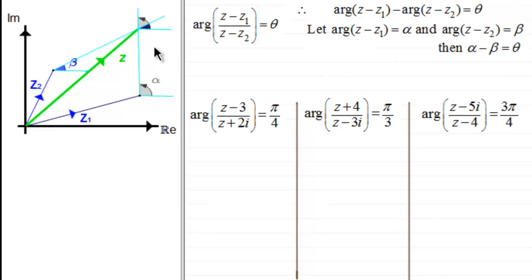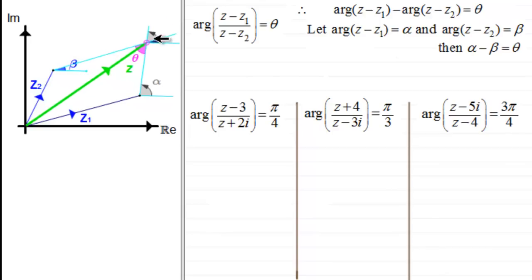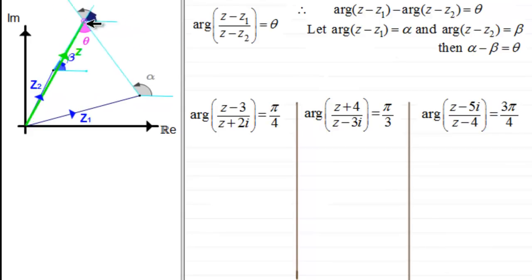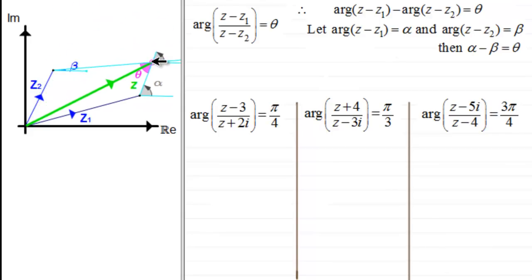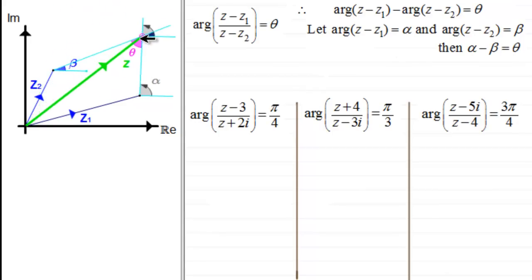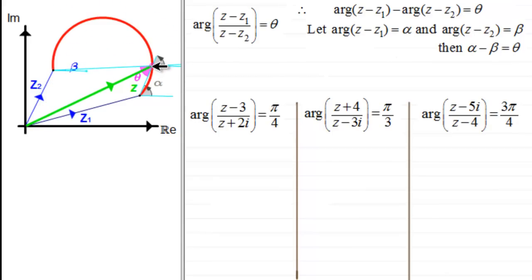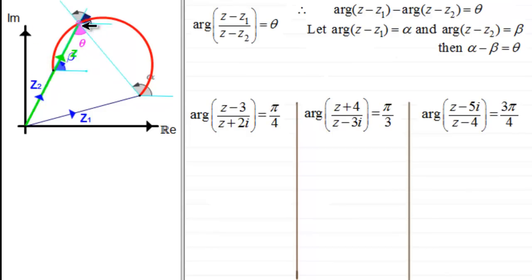We know that alpha minus beta equals theta, so this angle must be theta. As angles alpha and beta vary, the locus of z traces out an arc of a circle, with the angle theta subtended from the chord at the endpoints z1 and z2.